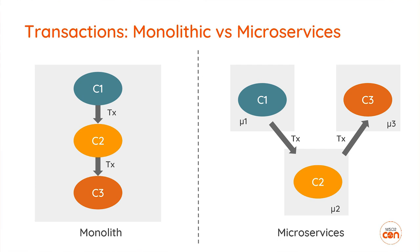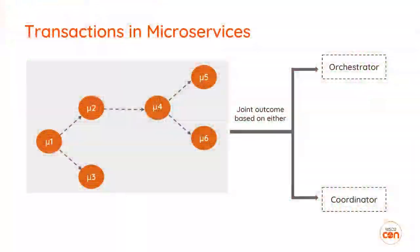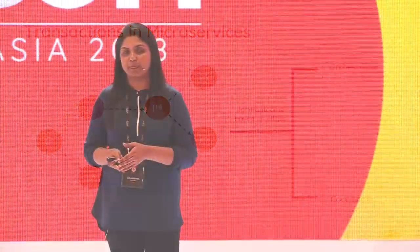When we look at transactions across these two types, consider three components interacting with each other that need to participate in a single business transaction — for example, component one interacting with MySQL, component two with Oracle. To achieve a single business transaction, we need to maintain the transaction context across all components. In a monolith this is straightforward since they run in the same process, but in microservices these same components run in different environments.